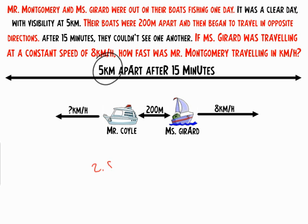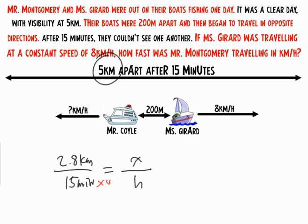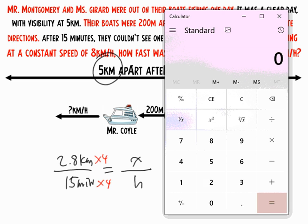So Mr. Coyle had to travel 2.8 kilometers in 15 minutes. To find his rate of speed, we reverse the proportional reasoning just like we did for Ms. Girard: multiply 15 minutes by 4 to get 60 minutes, and multiply 2.8 kilometers by 4. Using a calculator, 2.8 times 4 gives us 11.2.